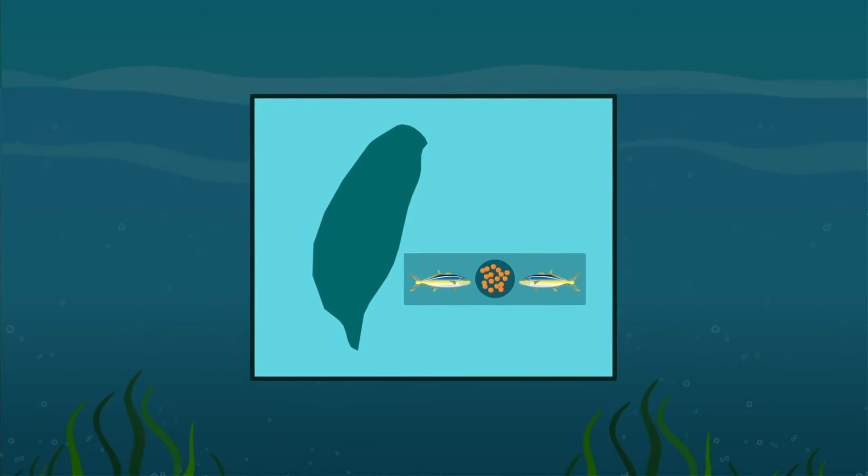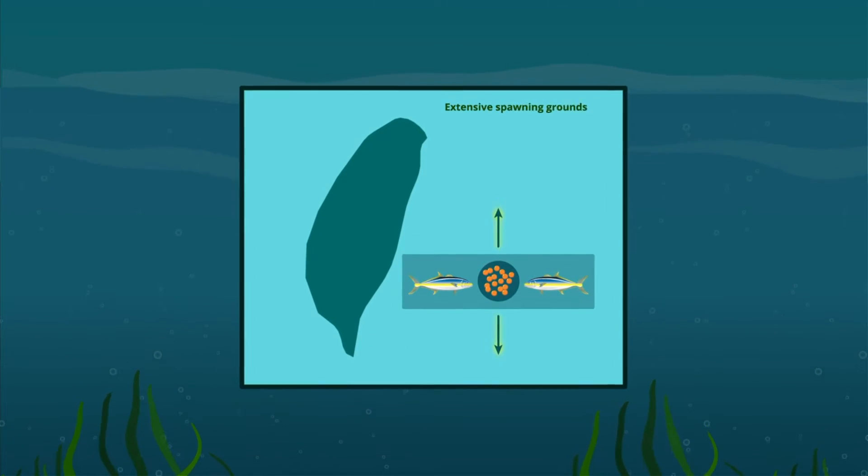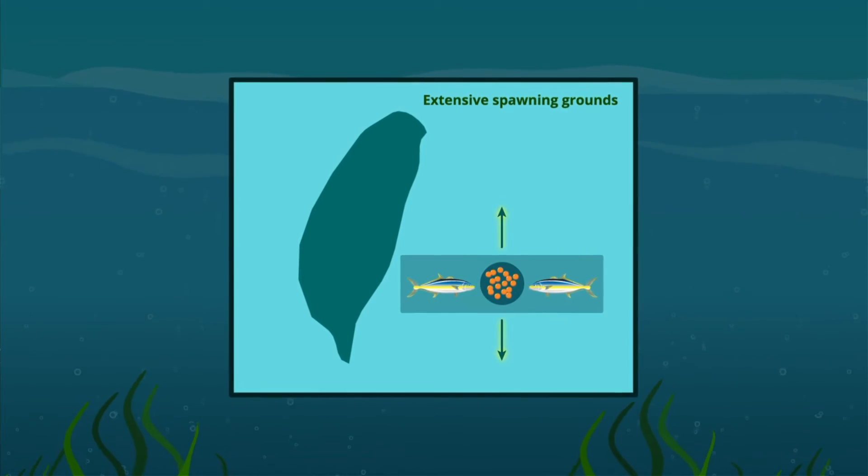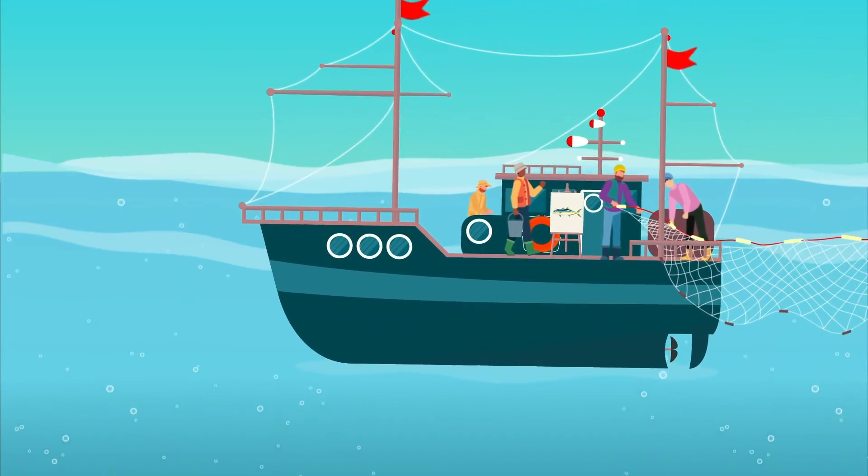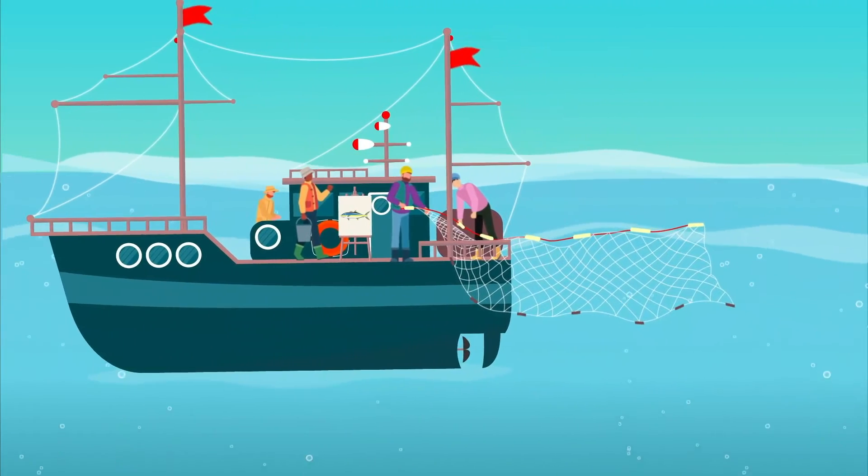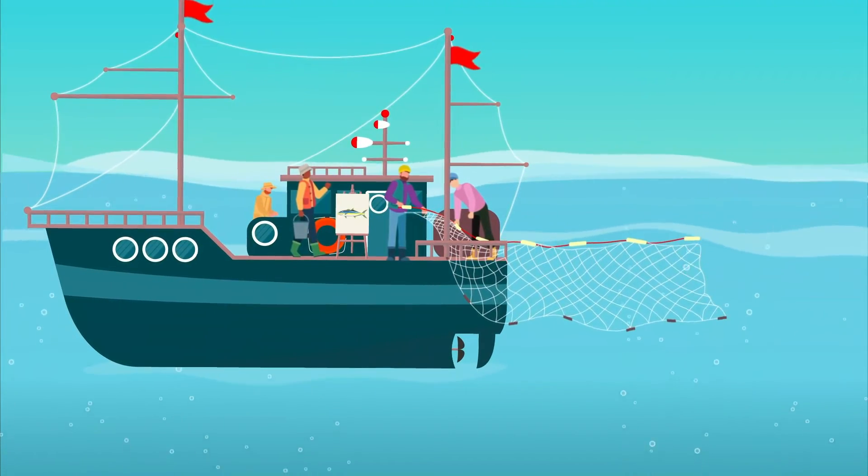These findings demonstrate that greater amberjack have more extensive spawning grounds than previously thought and constitute a first step towards understanding the population structure of this economically important fish.